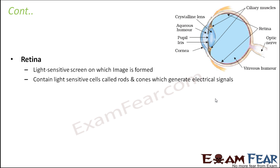Next is the most important part of the eye — the retina, where the image is formed. It is a light-sensitive screen containing cells called rods and cones. These cells sense light and convert it into electrical signals, which are then transported to the brain through the optic nerves. The image is always formed on the retina.